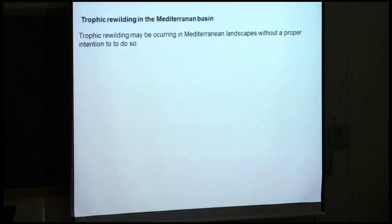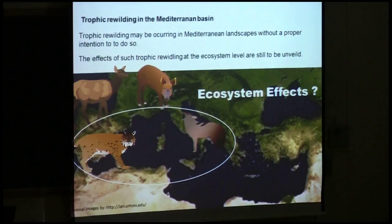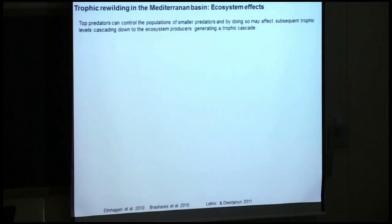According to this, trophic rewilding may be occurring in the Mediterranean landscape even without a proper intention to do so, and we are not very aware of what the ecosystem effects of this direct trophic rewilding may be. Top predators can control the populations of smaller predators, and by doing so they may affect subsequent trophic levels, cascading down to ecosystem producers and generating a trophic cascade.